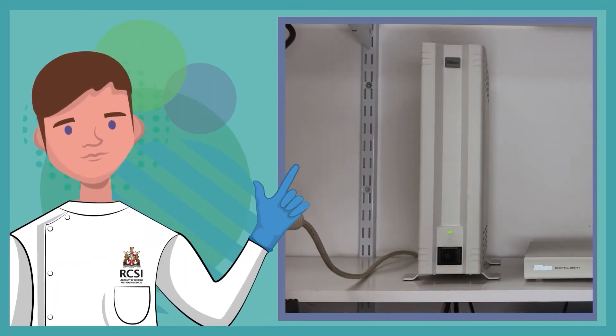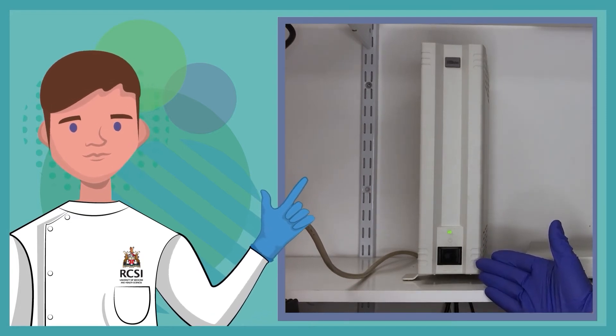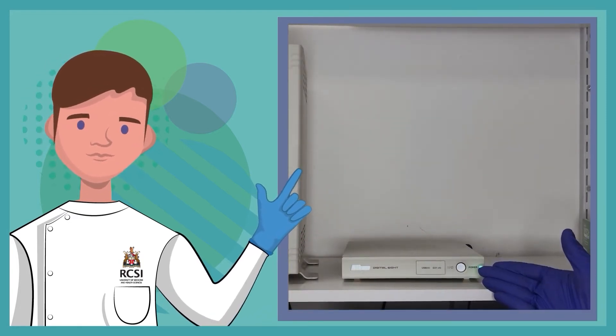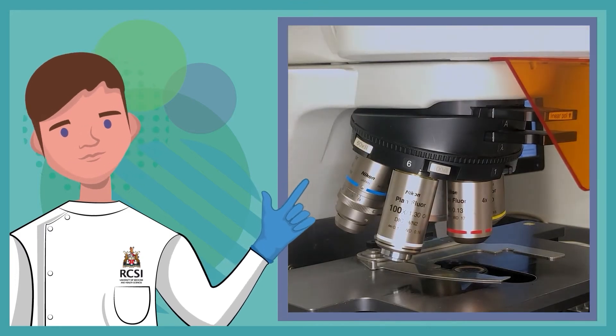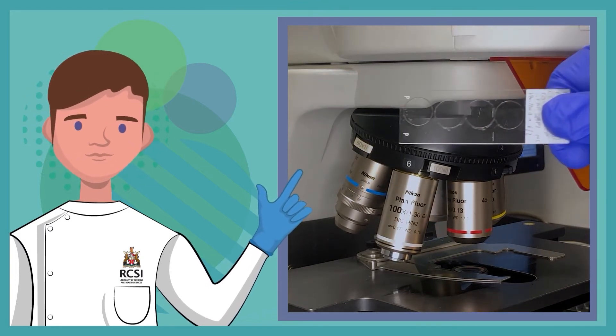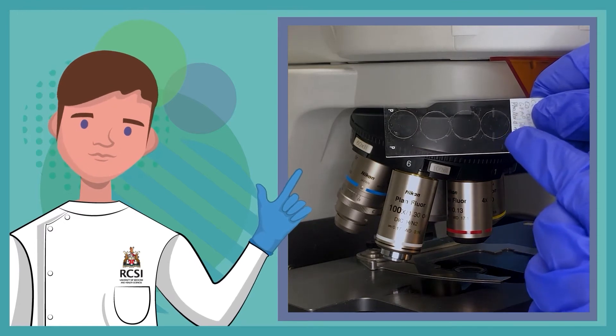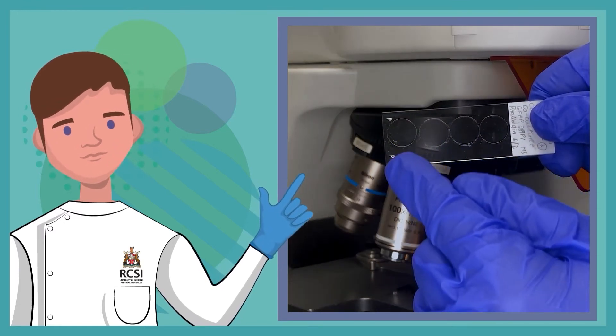Two other modules that are important are both the power source for the microscope itself and the power source for the camera. The sample we will look at today is a slide mounted with cover slips that have had cells grown, fixed, and immunostained on it.